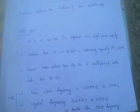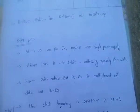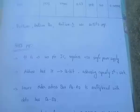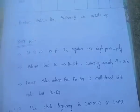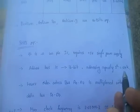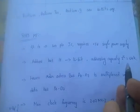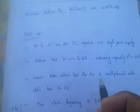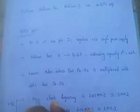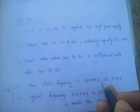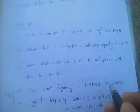Coming to the 8085 microprocessor in detail: it is a 40-pin IC and requires a +5 volt single power supply. The address bus is 16 bits, giving a memory addressing capacity of 2^16 = 64 kilobytes. The lower-order address bus A0–A7 is multiplexed with data bus D0–D7. The maximum clock frequency is 3.07 MHz, which we consider as 3 MHz.